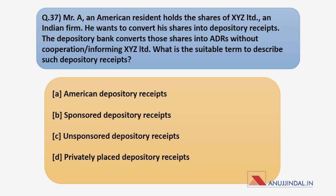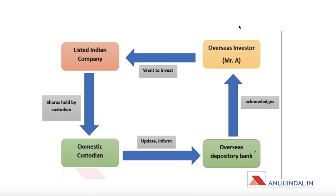This question says that Mr. A, an American resident, holds the shares of XYZ Ltd, an Indian firm. He wants to convert his shares into depository receipts. The depository bank converts those shares into ADRs without the cooperation or informing of XYZ Ltd. What is the suitable term to describe such depository receipts? To answer this, you must understand the terms given in the options. First, let's understand the mechanism of depository receipts through a circular flow.